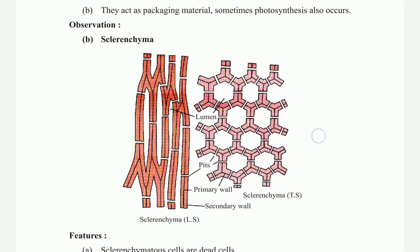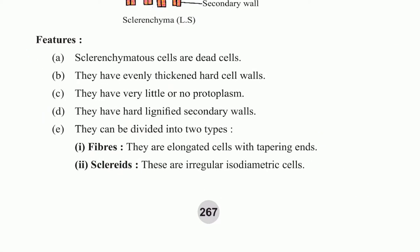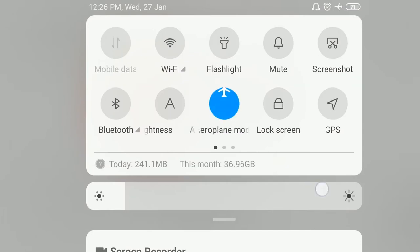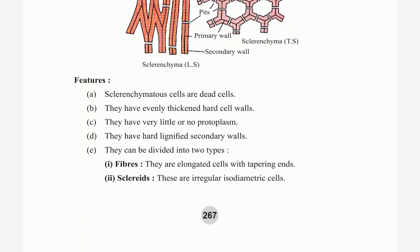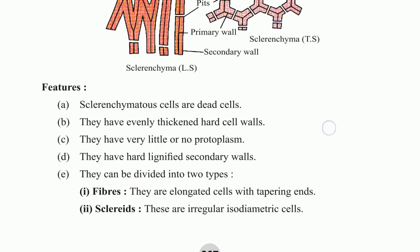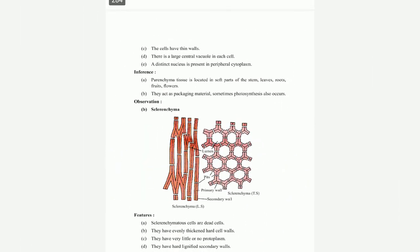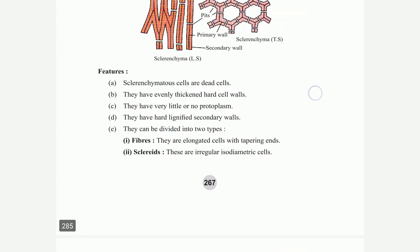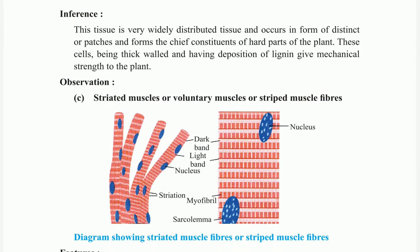Sclerenchyma observation: features include thick-walled dead cells with fibres. Dead cells are hard. Inferences: this tissue is widely distributed, occurs in the form of distinct patches, and forms deep constituents of hard parts of the plant — thick-walled cells with lignin give mechanical strength to the plant.